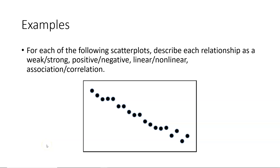Let's now apply the terminology from the prior slide to some examples from the alternate textbook, Section 8.1. Looking at the first scatterplot on the slide, we would say that relationship is strong — there is definitely a distinct pattern to the dots. We would say it is negative because the dots go downward from left to right, the pattern is linear, and they display a correlation because there is a strong linear pattern to the dots.